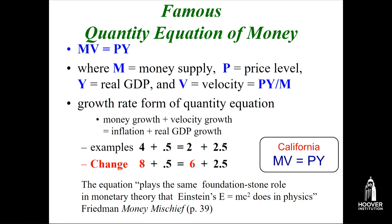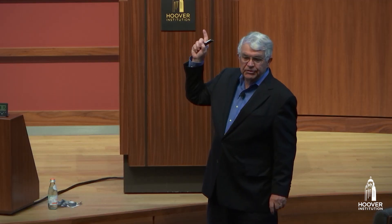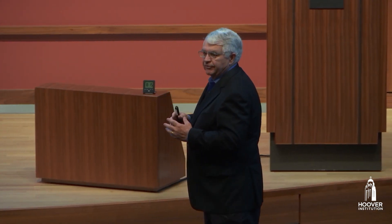The quantity equation is MV equals PY. M is money. V is velocity — how many times money turns over during a year. P is the average price of goods and services in the economy, the price level. Y is real GDP — the total production of goods and services in a country in a particular period. This holds as an identity because you can define velocity as the ratio of PY over M. That little license plate in the corner was Milton Friedman's license plate — MV equals PY. My prized possession is a California license plate with MV equals PY.